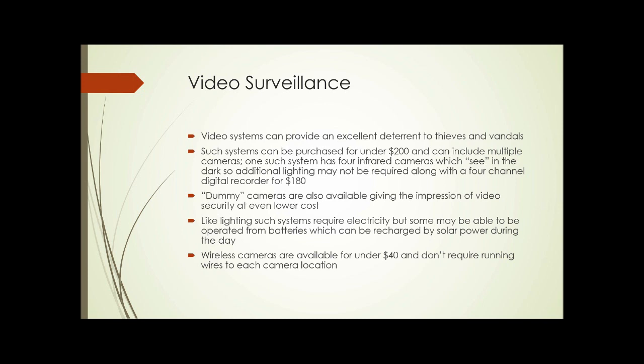Video surveillance. Video systems can provide an excellent deterrent to thieves and vandals. And if something does happen, they can give you a record of what happened and how it happened so you can take steps to prevent that in the future. When we think of video surveillance, most of us think of pretty complicated and expensive systems. But for under $200, you can buy a system that has four infrared cameras, which can see in the dark — so you may not need additional lighting along with the cameras to see what's going on.